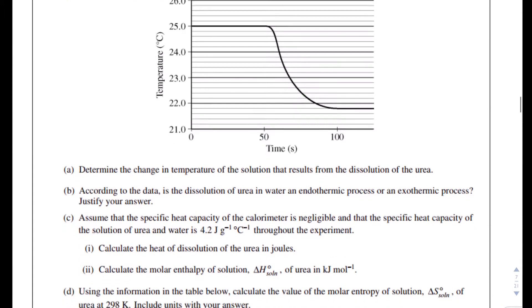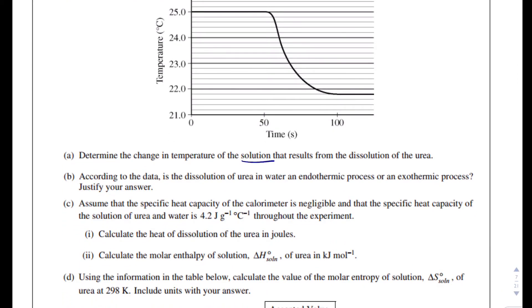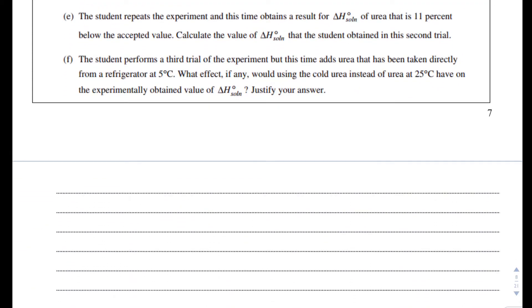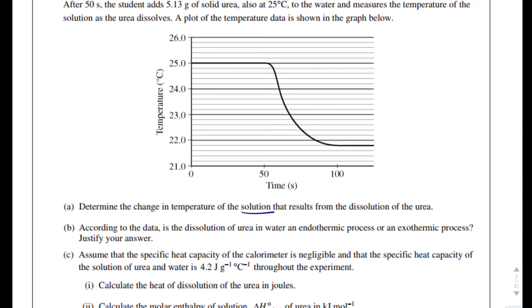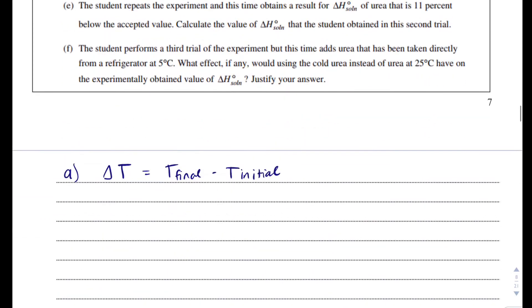Part A asks to determine the change in temperature of the solution that results from the dissolution of the urea. So that's asking for delta T. If we remember that delta T equals T final minus T initial, what I need to do is read this graph. It looks like every hash mark is 0.2, so this looks like 21.8 degrees Celsius, and we know from the question that we started at 25.0 degrees Celsius. So 21.8 degrees Celsius minus 25.0 degrees Celsius equals delta T, which equals negative 3.2 degrees Celsius. That's question A.